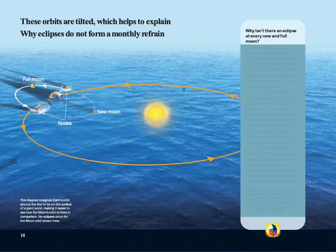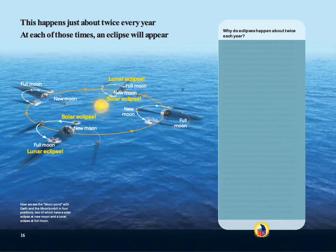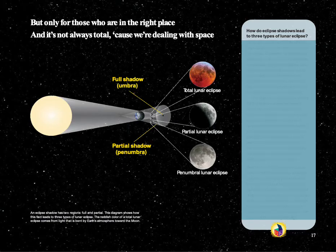While Moon orbits Earth showing phase after phase, repeating each twenty-nine and one-half days. These orbits are tilted, which helps to explain why eclipses do not form a monthly refrain. An eclipse of the Sun can only arise when new Moon and two orbits all coincide. This happens just about twice every year. At each of those times, an eclipse will appear. But only for those who are in the right place, and it's not always total, because we're dealing with space.